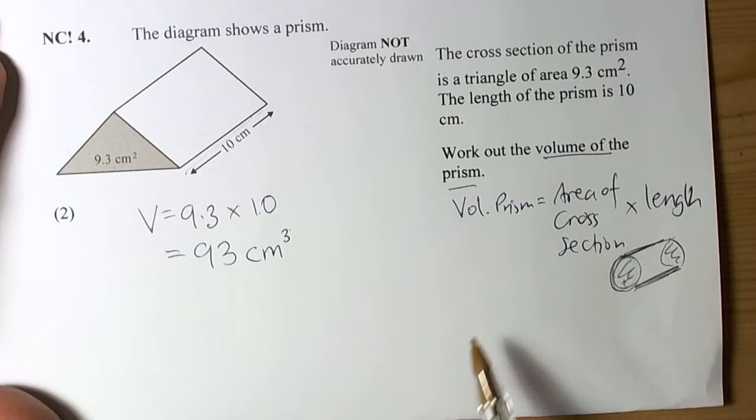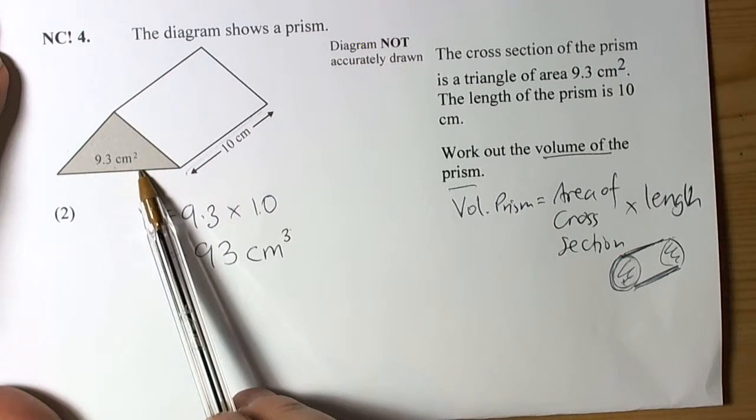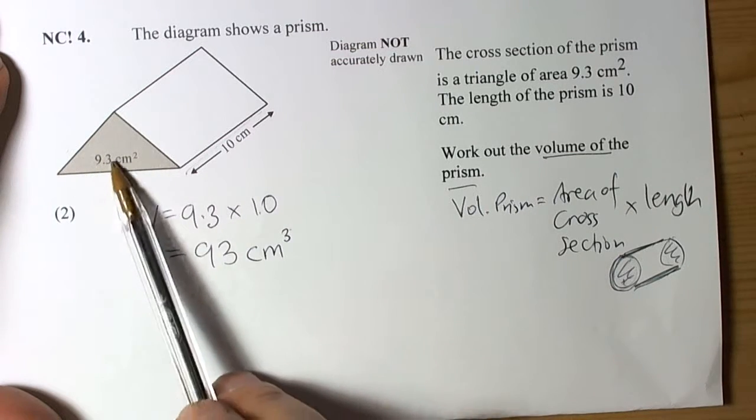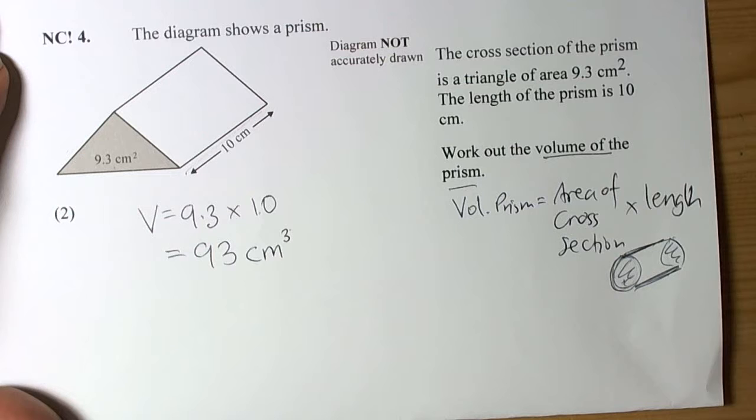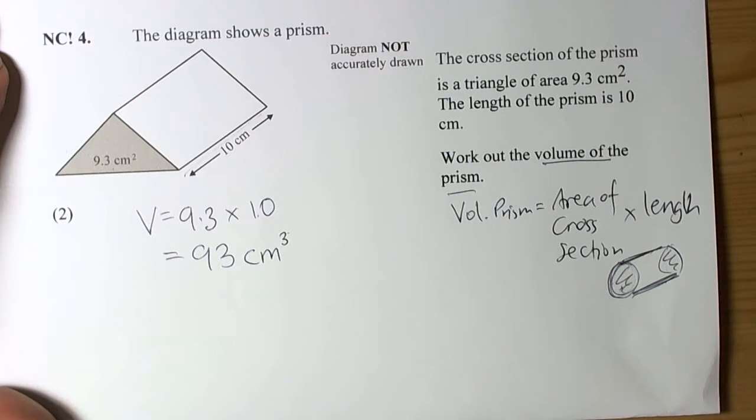So that's a quick reminder about finding the volume of a prism. In this case they were nice, they gave us the actual area, but if they hadn't given us the area then of course we would have worked this out using the formula for the area of a triangle and so forth to get the volume. Just remember the correct units for volume: cubic units.